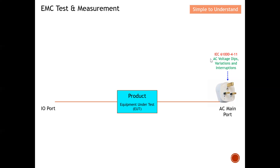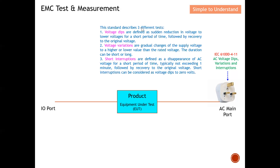The first test I'll discuss is IEC 61000-4-11 — AC voltage dip, variation, and interruption. This standard describes three tests. First, voltage dips are defined as a sudden reduction in voltage to a lower level for a short period of time, followed by recovery to the original voltage. The key question is whether your EUT can still function during this event.